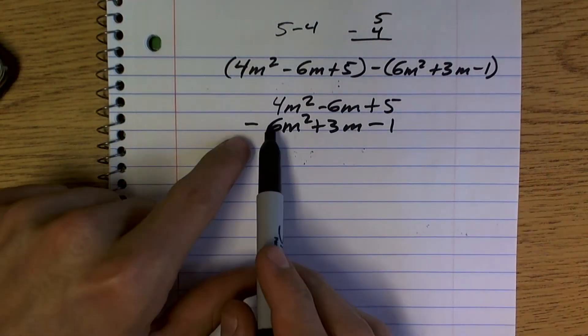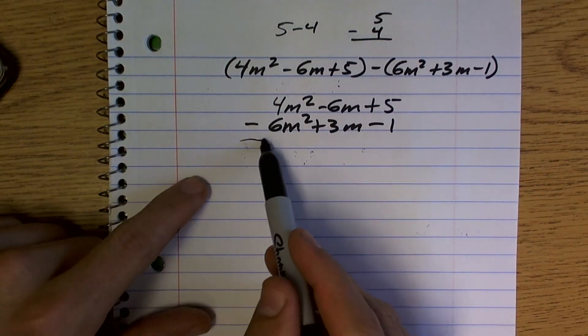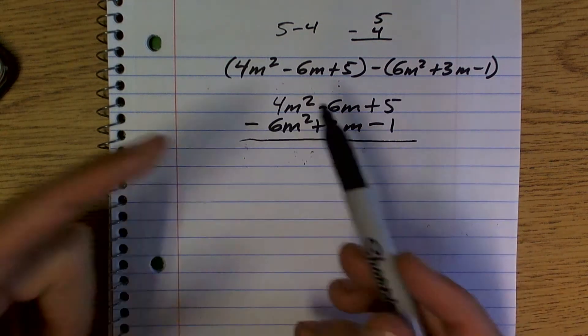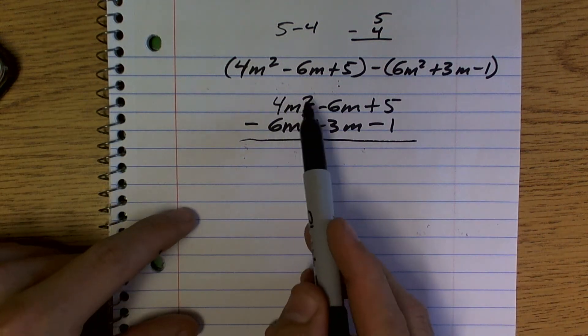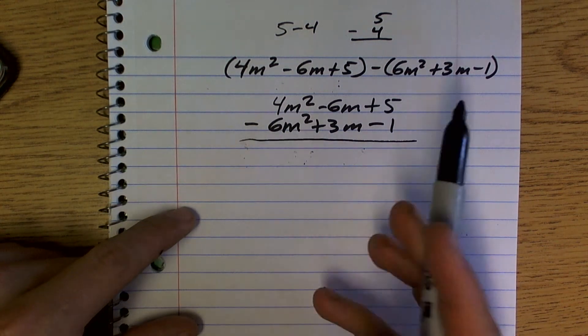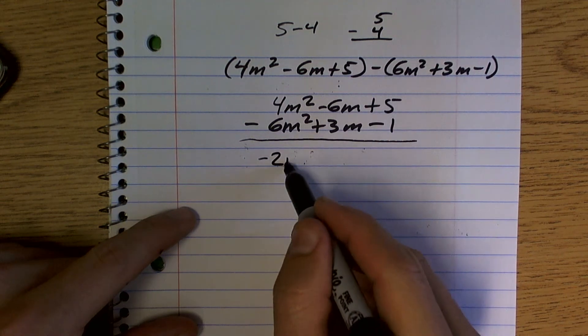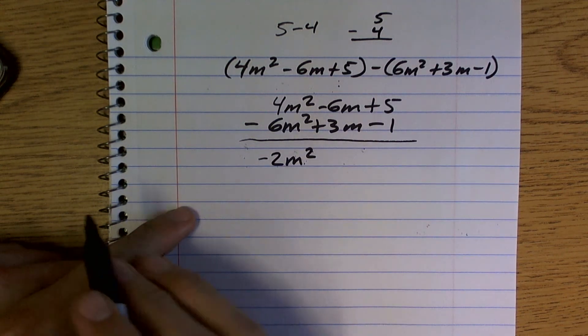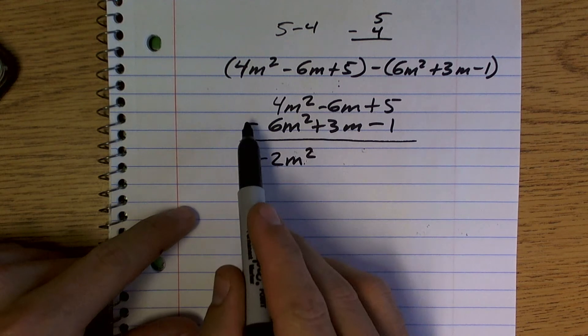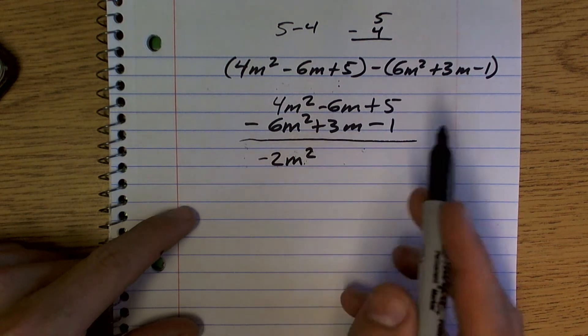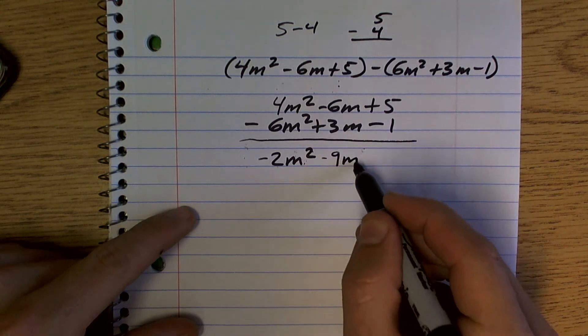So remember, this is minus all these terms. So you just make a nice little bar. So just say it out loud as you do it. 4M squared minus 6M squared is a negative 2M squared. Negative 6M minus positive 3M is a negative 9M.